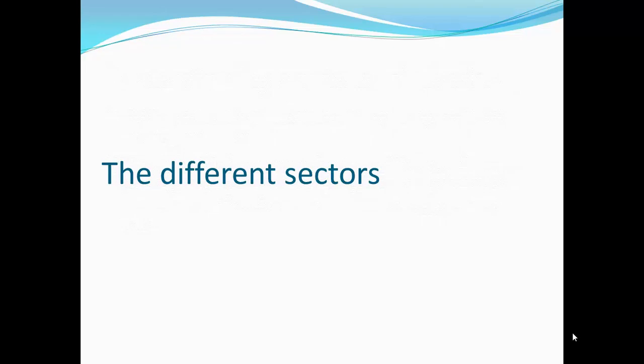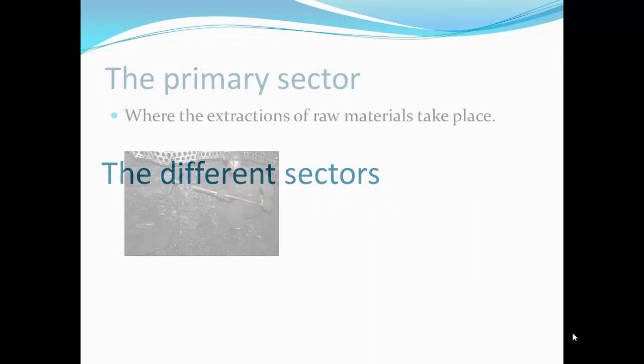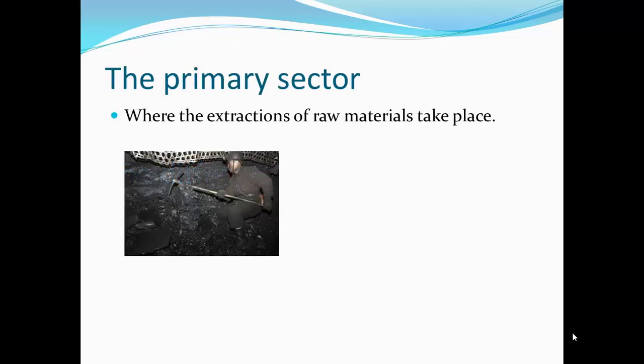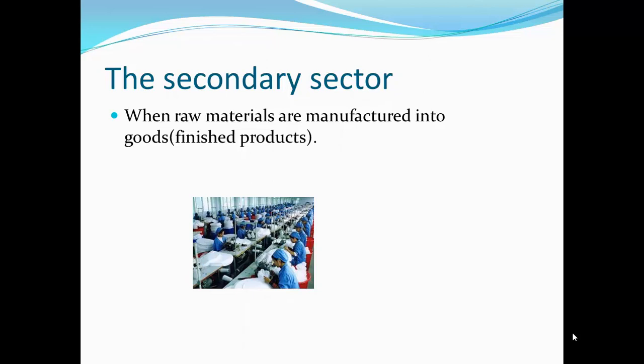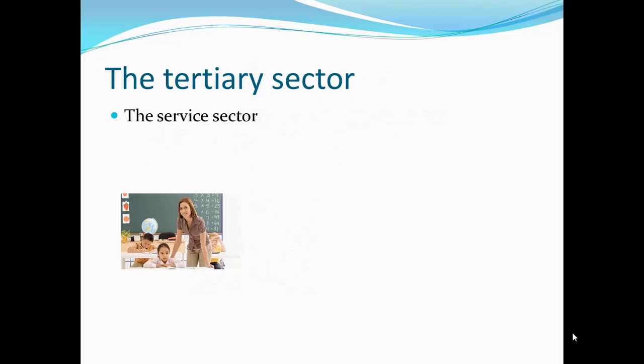Here are the three different sectors. The primary sector is where the extraction of raw materials takes place — mining is an example, and here is a picture of someone mining. The secondary sector is where raw materials are manufactured into finished goods — here you can see factory workers making sheets from wool. The tertiary sector is the service sector, where a service is provided, such as teachers, lawyers, doctors and nurses.